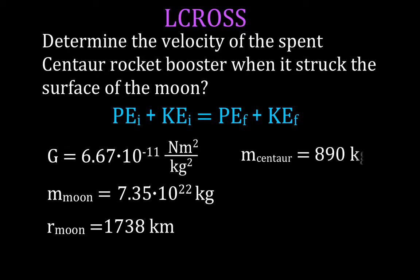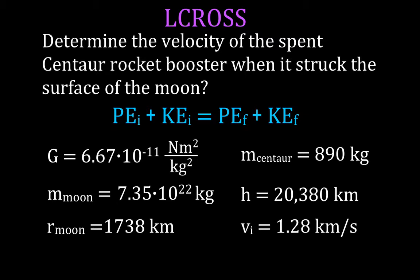The radius of the moon is 1738 km. The mass of the Centaur booster rocket when it struck the moon was 890 kg. It was released from an orbital height of 20,380 km above the moon's surface, with an initial velocity of 1.28 km/s. We can calculate the initial potential, initial kinetic, and final potential energies, then solve for the final velocity using KE = ½mv².